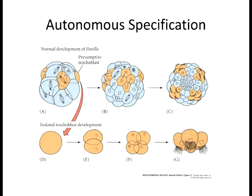That's autonomous specification—due to internal cytoplasmic components: the mRNA and the subsequent proteins that get translated from that mRNA, which was originally set up in the oocyte, or the egg.